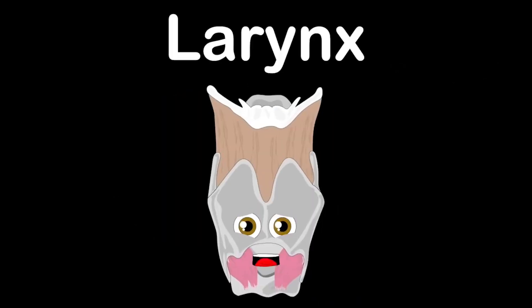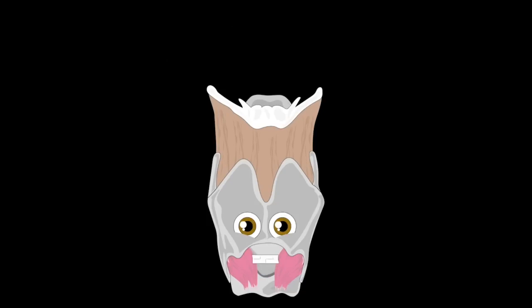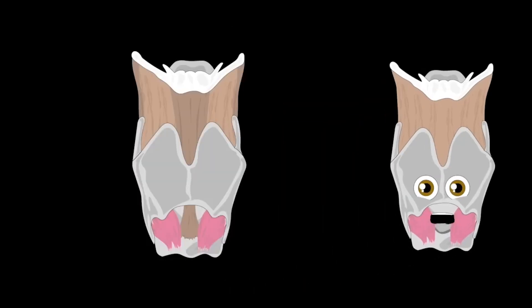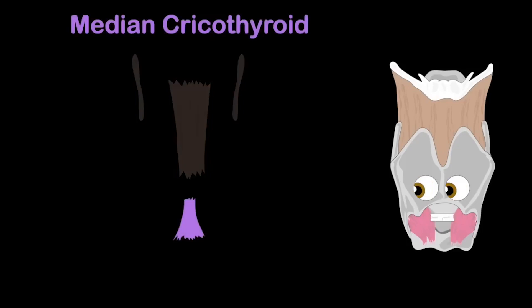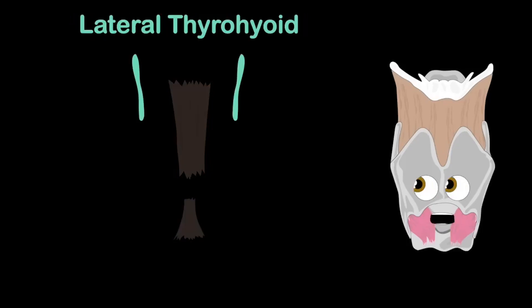I'm your larynx, I'm the reason you can talk and the reason you can sing. A hollow muscular organ — sit and learn, I'll do my thing. I have a couple ligaments — listen to knowledge I sling. I'll name them off one by one while I teach, you can sing. Median thyrohyoid and cricothyroid ligament; the lateral thyrohyoid are there so you can twist and bend.